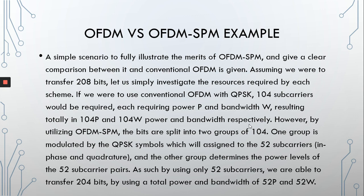To show how many resources OFDM-SPM can save compared to conventional OFDM, here is a small example. Let's assume we want to transfer 208 bits using both OFDM-SPM and conventional OFDM separately. If we use conventional OFDM, we'd require 104 subcarriers, each requiring a power P and a bandwidth W — resulting in a total power of 104P and a total bandwidth of 104W to transmit 208 bits.